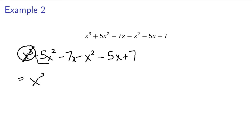And we have this 5x squared and this negative x squared. Those are the only x squared terms. So those are the only two we can combine there. So that'll be 5 minus 1 is going to be 4x squared. And so now we look for terms that only have an x.